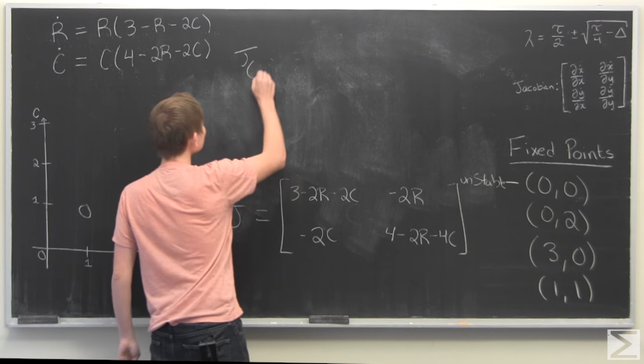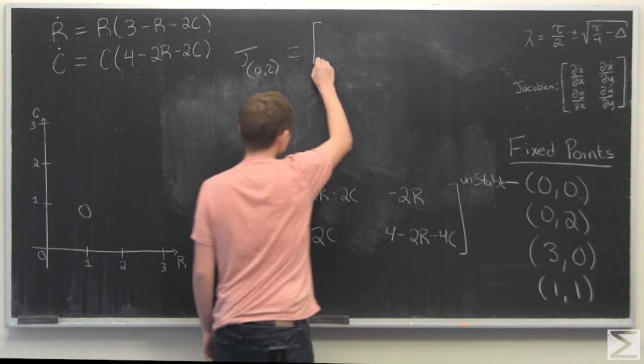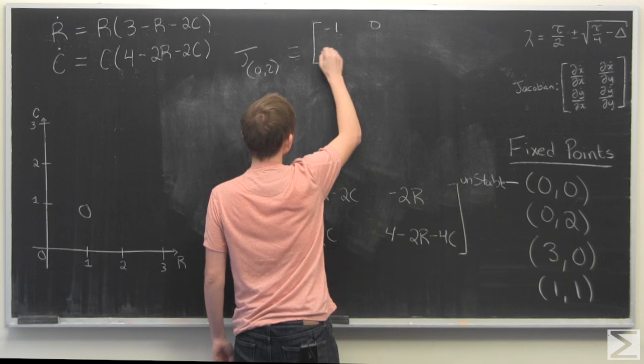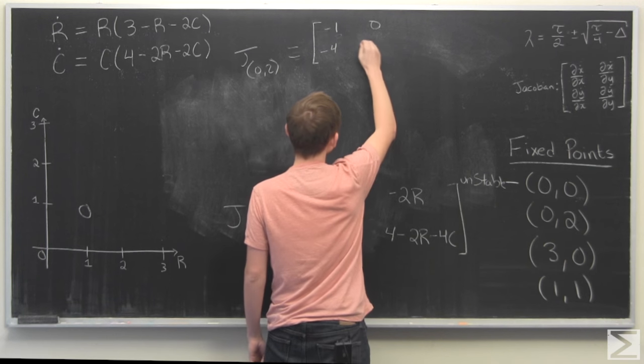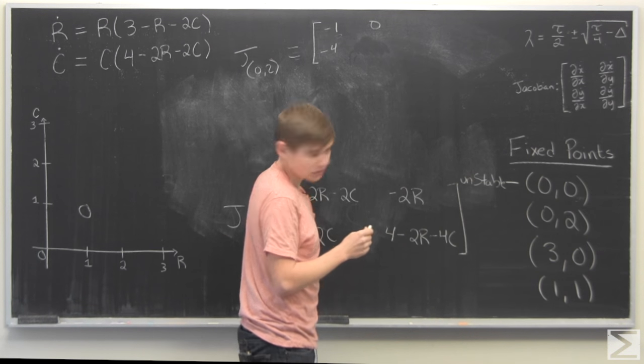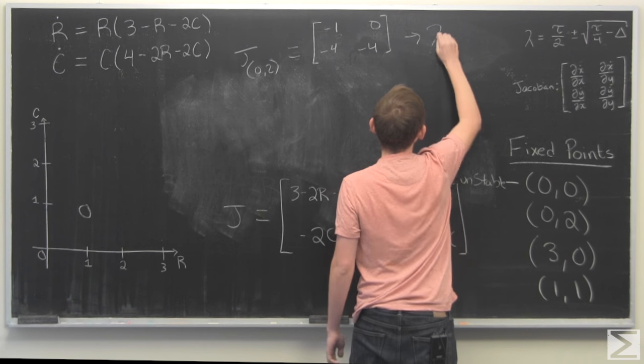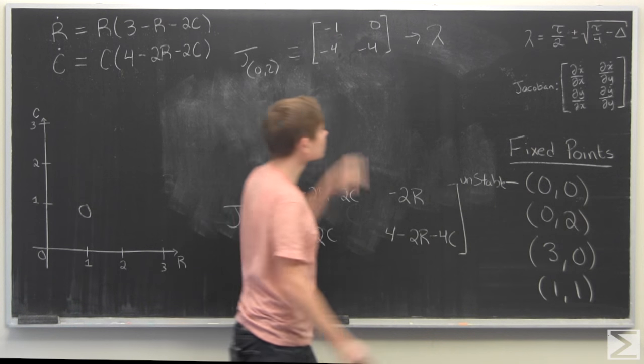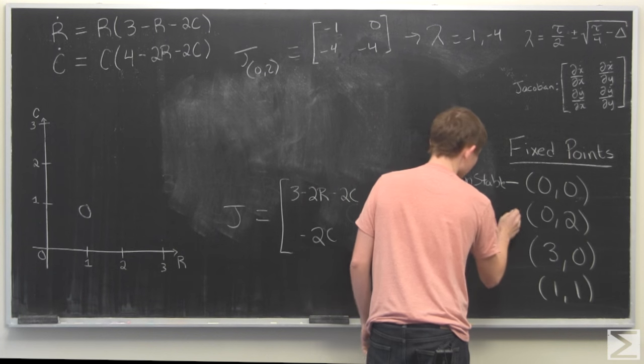Moving on to 0, 2. We get a Jacobian of negative 1, 0, negative 4. And therefore, we get eigenvalues. Since this is 0, we know the eigenvalues are just going to be these two. So we have eigenvalues of negative 1, negative 4. Both are negative, so we end up with this being stable.